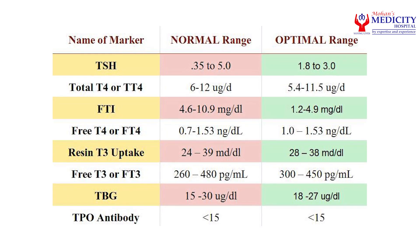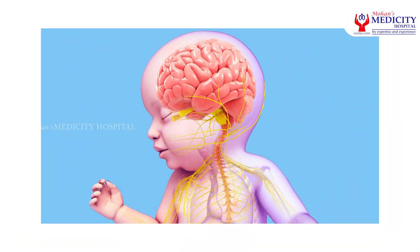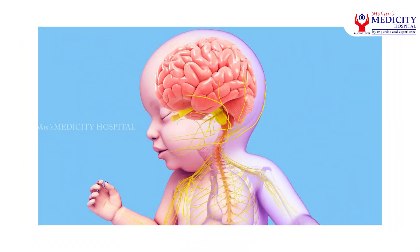What is the difference in TSH levels? This is subclinical hypothyroidism — the TSH is a little bit elevated. If you check the thyroid in pregnancy, the TSH value is a little bit higher than the normal value.